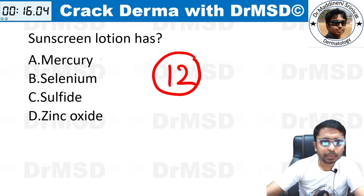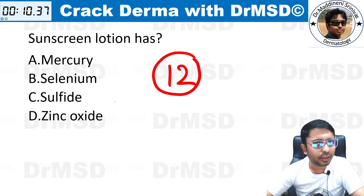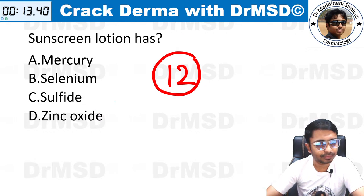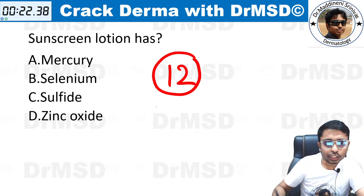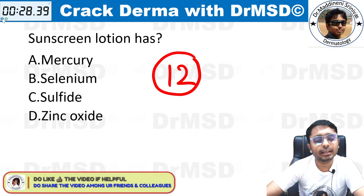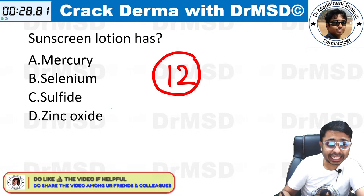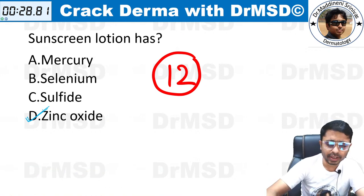This is probably the last question of our entire series — question number twelve. Sunscreen lotion has — what do you think out of the given options will a sunscreen have? Very good — Lavanya, Raja, Sharma — all of you marked it right. If you have marked it as option D, then you are absolutely correct: it is zinc oxide which is present in the sunscreen lotion.